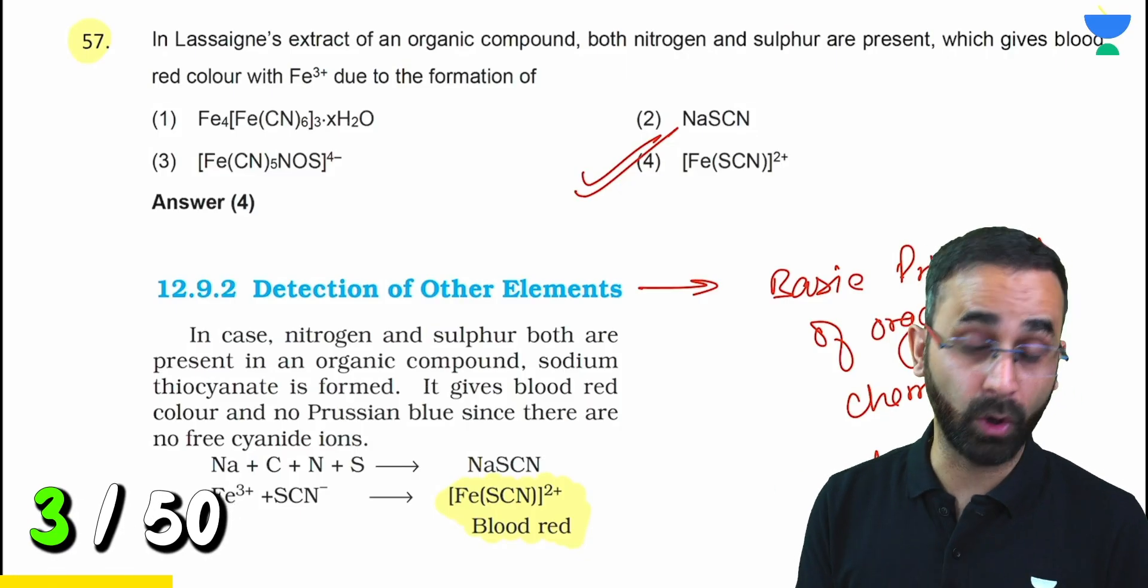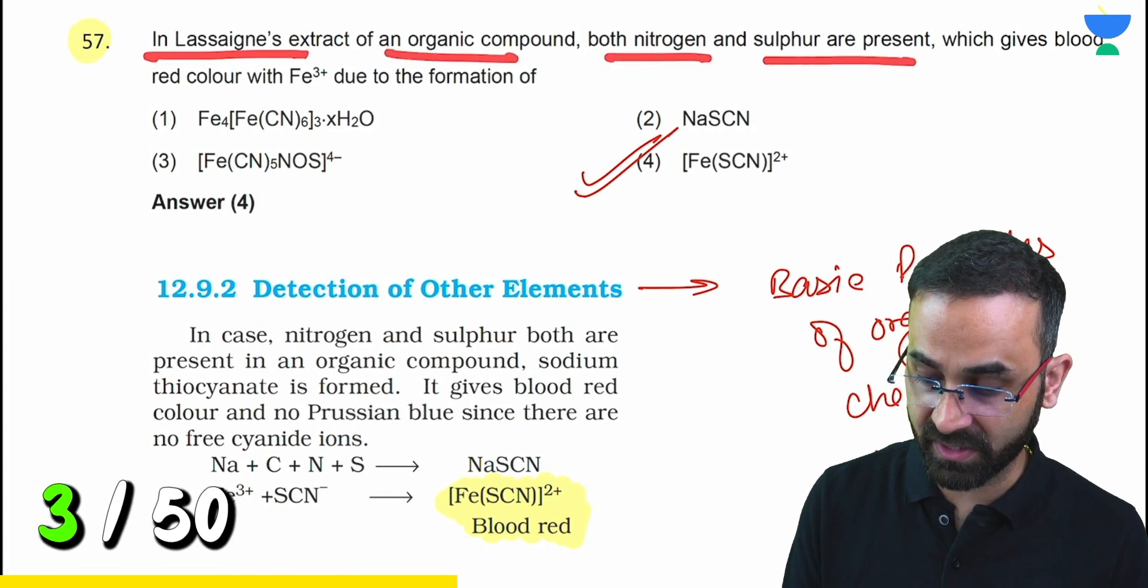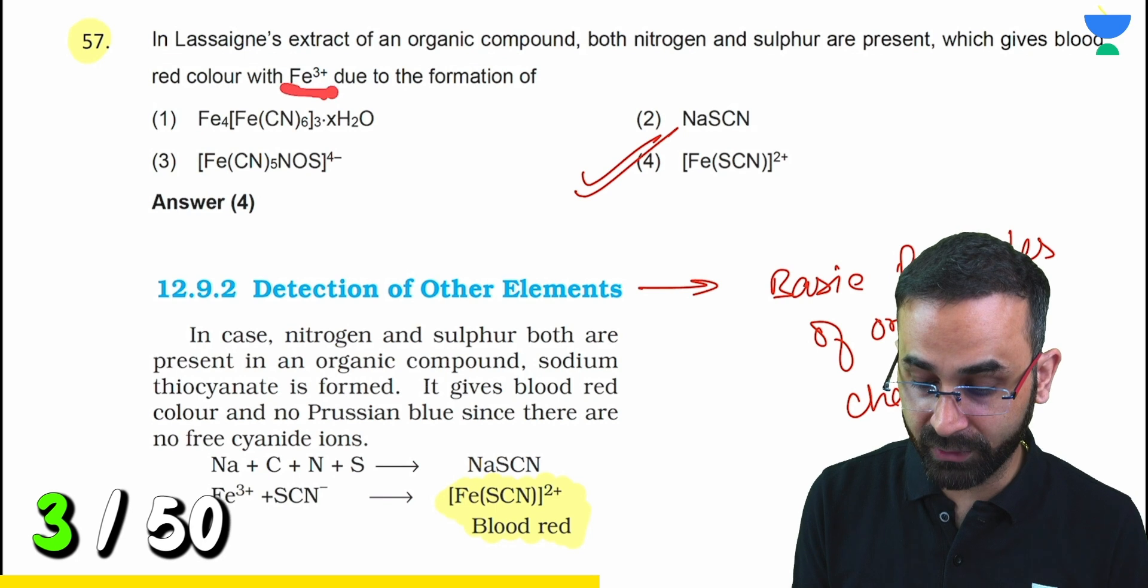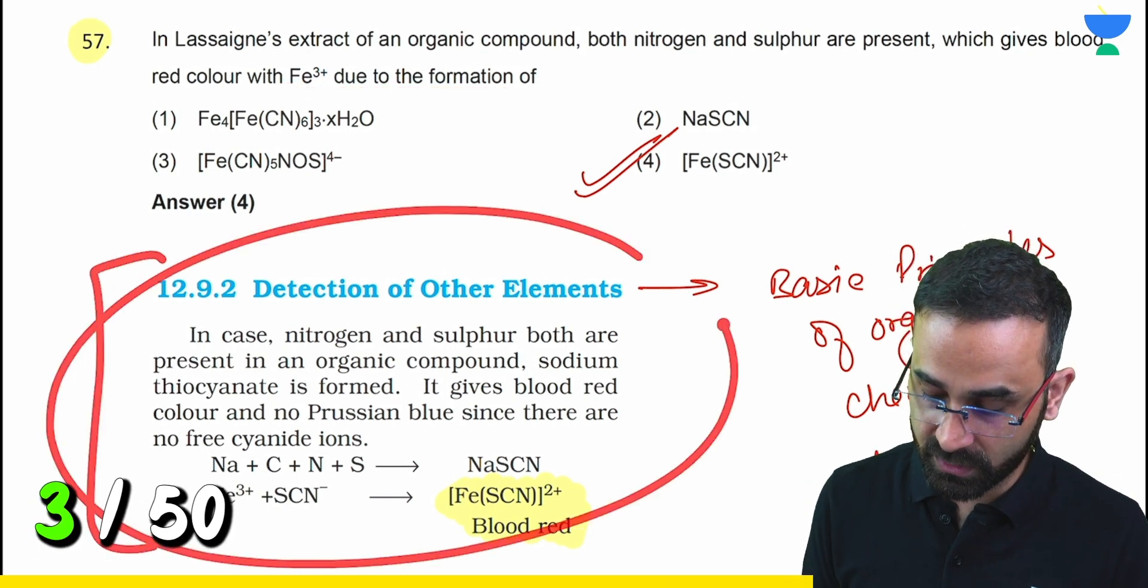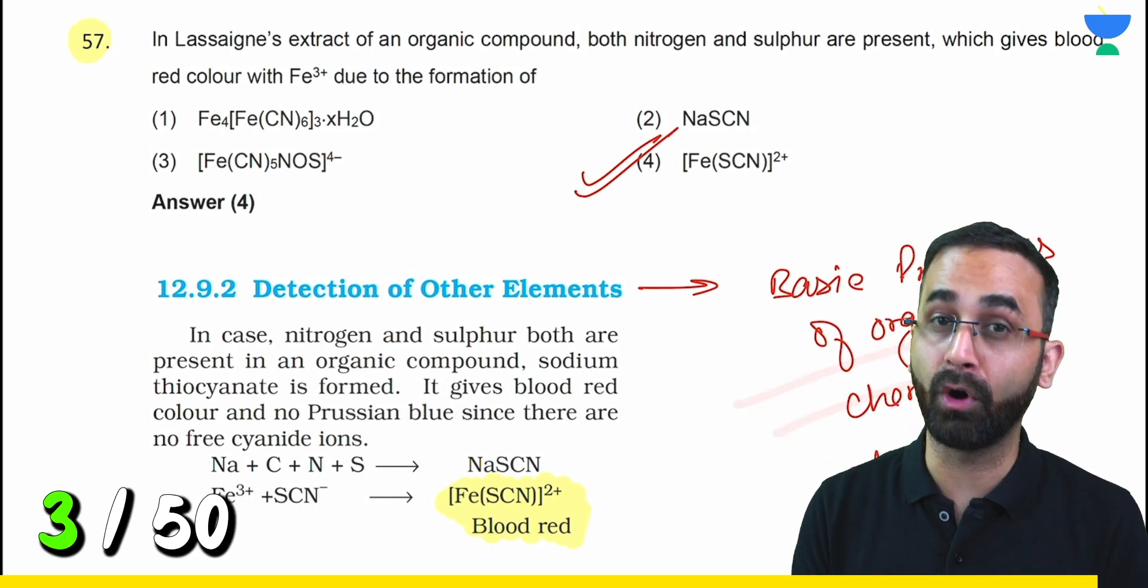Another question from practical organic chemistry. Lassaigne's extract of an organic compound: both nitrogen and sulfur are present which give blood red color with Fe³⁺ ion. The entire question is from topic 12.9.2 NCERT Class 11, the first chapter of organic chemistry.